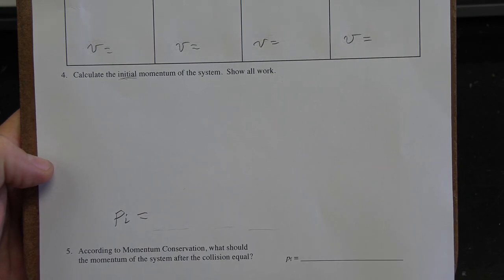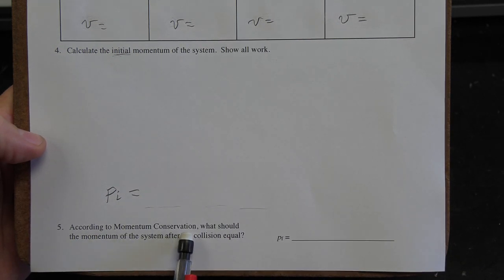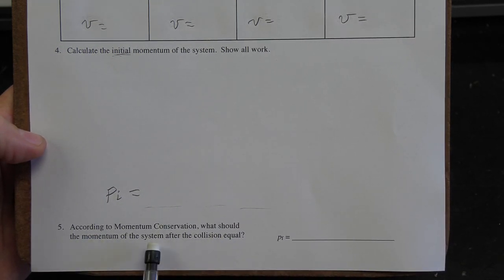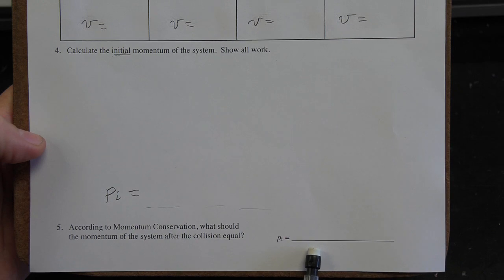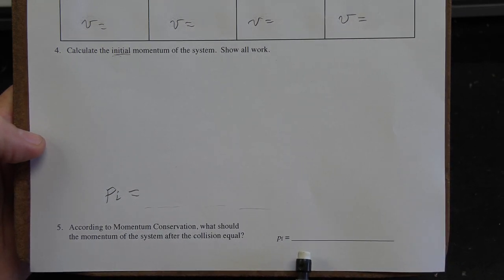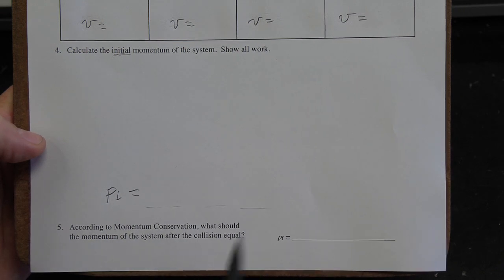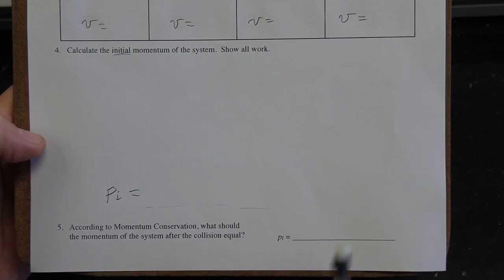Okay, the next thing that you're going to do is number five. According to momentum conservation, what should the momentum of the system after the collision be? You're making a prediction. But again, it's not a prediction like with a crystal ball or something like that. You're not just throwing out a number. It's based on your understanding of momentum conservation and stuff that you've already previously calculated. Go ahead and make your prediction now.